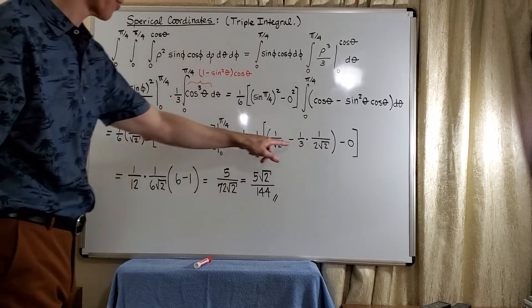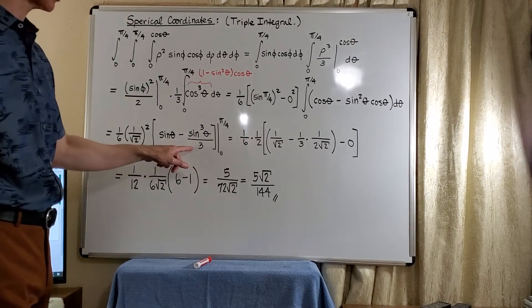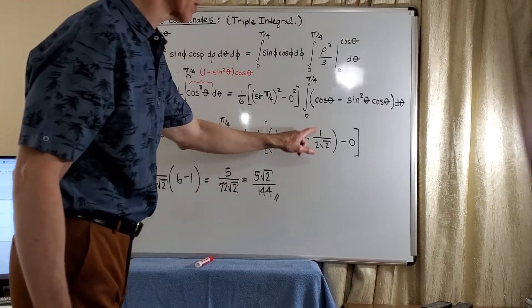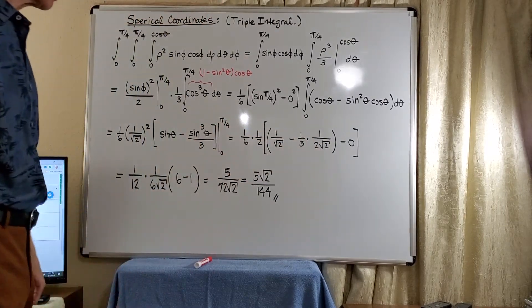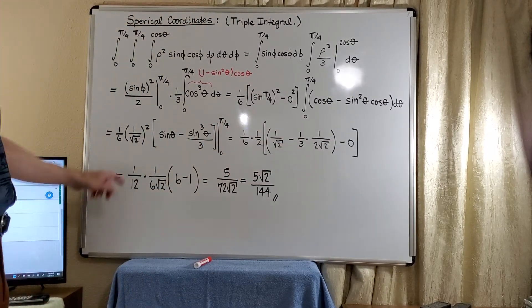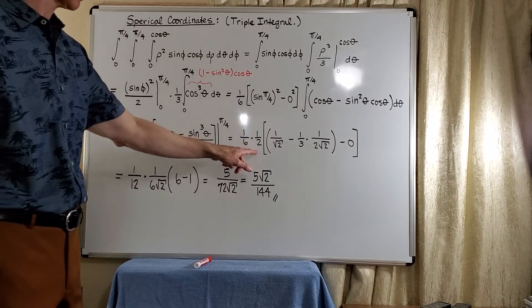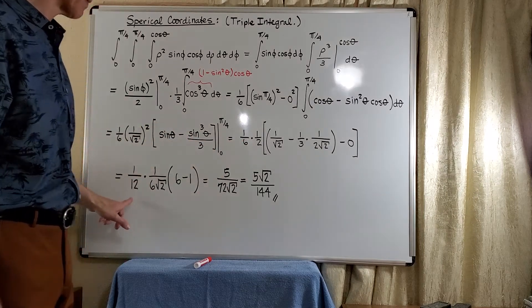Of course, we have the 1 third here. And then if we actually cube 1 over root 2, we get 1 over 2 root 2. So now everything's looking pretty good. We square the 1 over root 2 here and get 1 half. And so that's going to give us a 1 over 12.